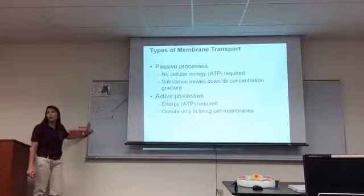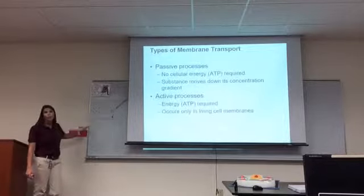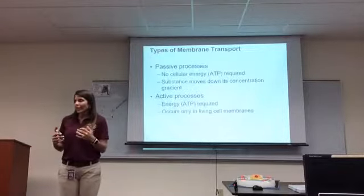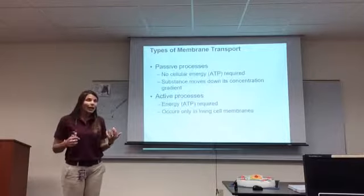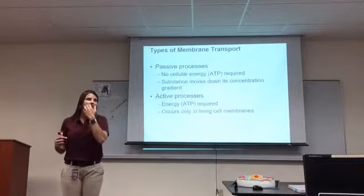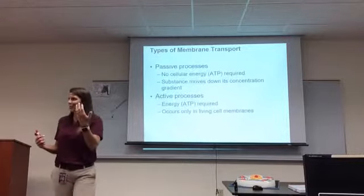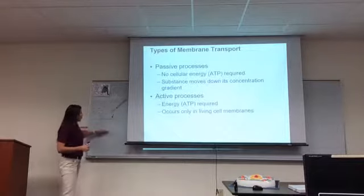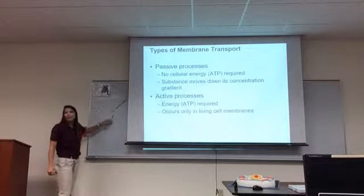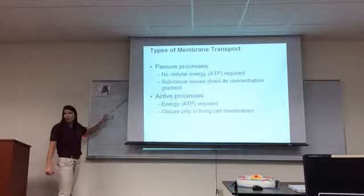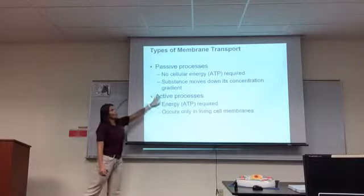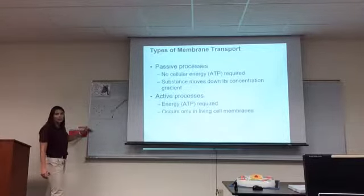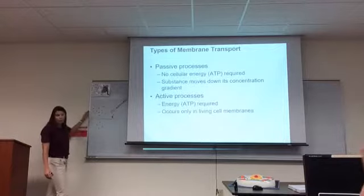Active processes are the exact opposite — they require energy because they're going from low concentration to high concentration. Think of the waterfall: once you've made it to the bottom, to go back up you have to do some work. You go from a low concentration to a high concentration — because it's not a natural flow, it takes work. So the concentration gradient means either going with — high to low, which is natural — or against — low to high, which is not natural.